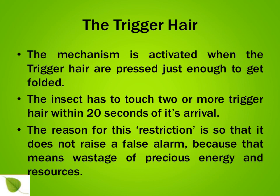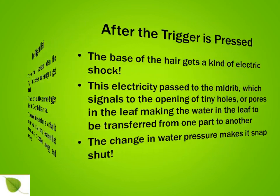The mechanism of closing the Venus flytrap is activated when the trigger hair are pressed just enough to get folded. The insect has to touch two or more trigger hair within 20 seconds of its arrival. The reason for this restriction is so that it does not raise a false alarm, because that means wastage of precious energy and resources. The Venus flytrap lives in areas where there is very little availability of nutrients.